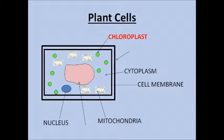The chloroplasts are where photosynthesis happens. Photosynthesis is how the plant makes sugars from the energy of the sun.